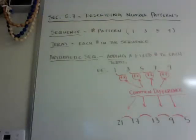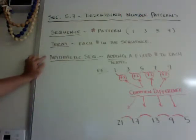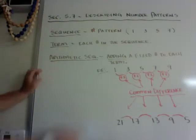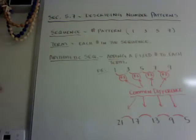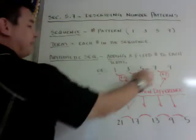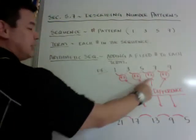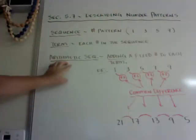So a sequence is made up of a bunch of terms in a row, in a pattern. Arithmetic sequence is when you add a fixed number to each number before it, or each term before it. So for example, 1, 3, 5, 7, 9, you can see I add 2 to each one. That's an arithmetic sequence.